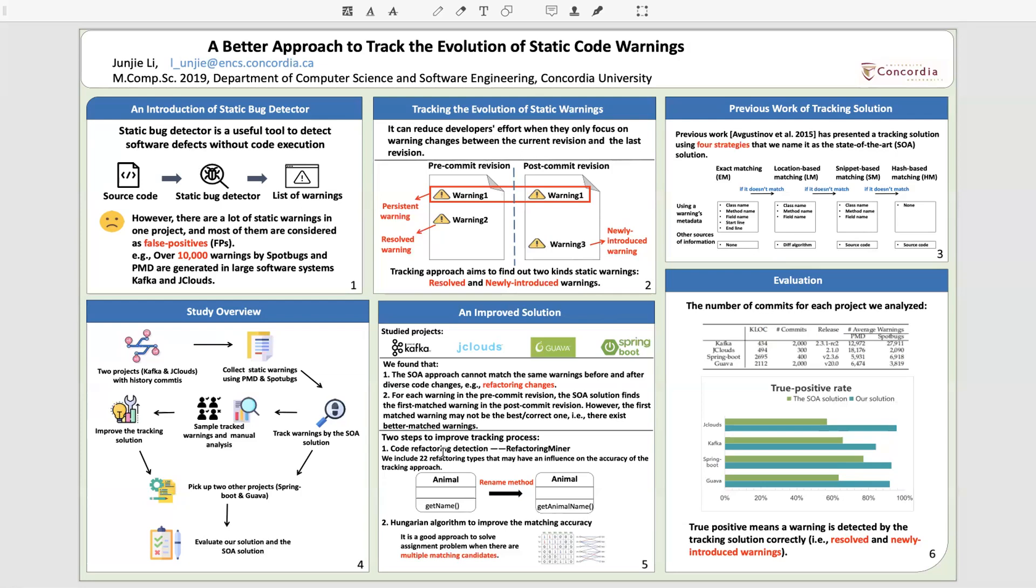So there are two steps to improve the tracking process. First one, that we adopt refactoring miner to extract code refactoring and help the matching process. Second one is adopting Hungarian algorithm to improve the matching accuracy. It's a good approach to solve assignment problems when there are multiple matched warnings.